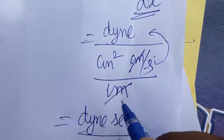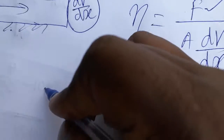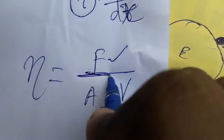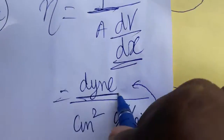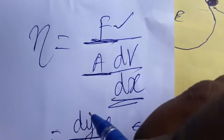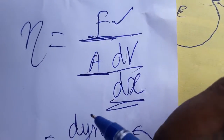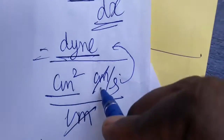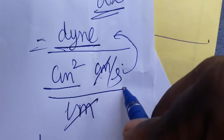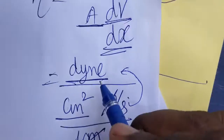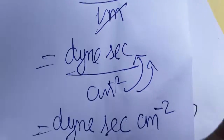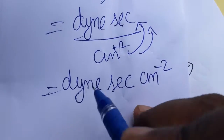We are fully following the CGS — centimeter, gram, second — system here. Force's unit is dyne, area's unit is centimeter squared (length times breadth), velocity's unit is centimeter per second, and displacement's unit is centimeter. This gives us the intermediate unit dyne·s·cm⁻².